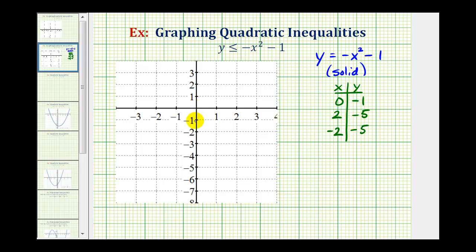We have a y-intercept of zero, negative one, and then we have the points two, negative five, and negative two, negative five. Now we can graph the parabola, but again, the graph is going to be solid, so it'll look something like this.